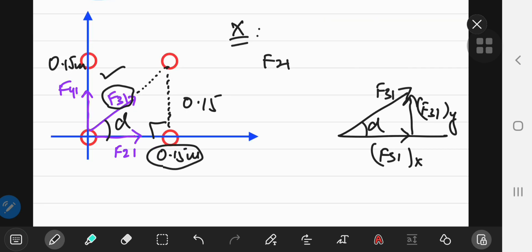Now one side is 0.15 and the other side is 0.15. 0.15 squared plus 0.15 squared. You take the square root and you get 0.21. The length of this hypotenuse is 0.21 meters.